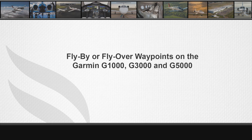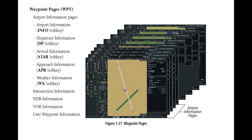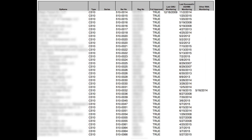This video will discuss some tips regarding flight plan waypoints on Garmin-equipped airplanes. Technical support has been receiving calls from pilots who wish to use flyby or flyover waypoints. This desire may be generated by ATC requesting an Aircraft Geometric Height Measurement Element, or AGMI, flyover.